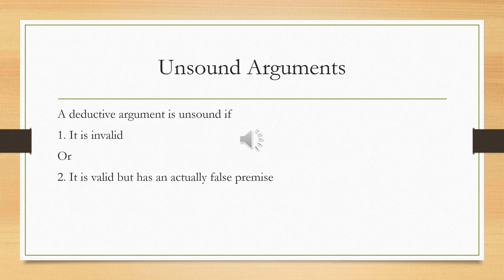A deductive argument is unsound first of all if it's invalid — that's why testing for validity is useful. If it's invalid, we can simply discard it. If it's valid, we move to the second level of testing: do the premises have actually true or false content? A valid argument can still fail if it is unsound — that is, when the valid argument has at least one actually false premise. Therefore, an unsound argument is a deductive argument that fails.